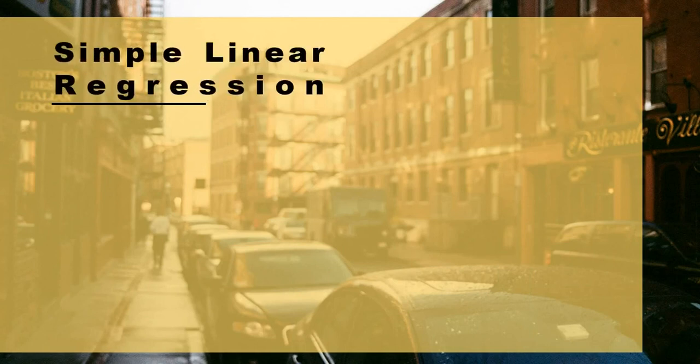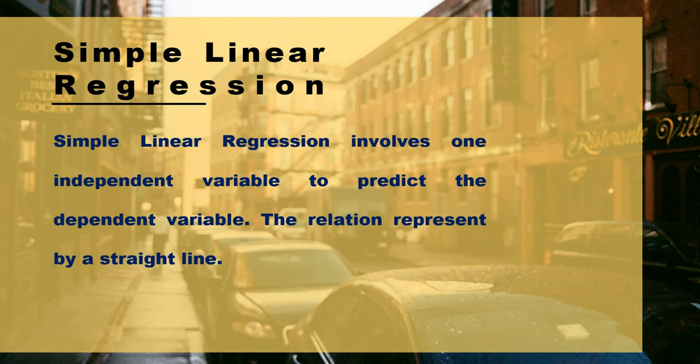Let's see what simple linear regression is. Simple linear regression involves one independent variable to predict the dependent variable. It is a statistical method that helps us understand the relationship between two continuous variables.